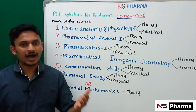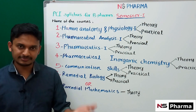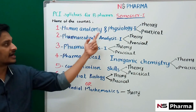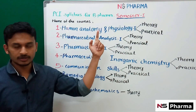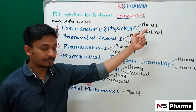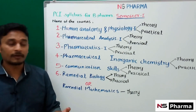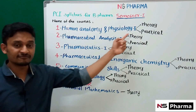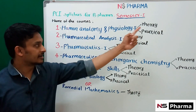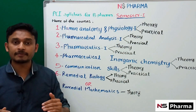What are the subjects you have to study in Semester One of B.Pharm? The first subject is Human Anatomy and Physiology One. It has both a theory paper and a practical paper.